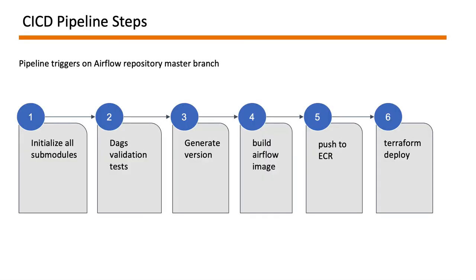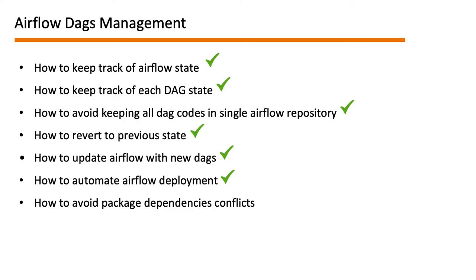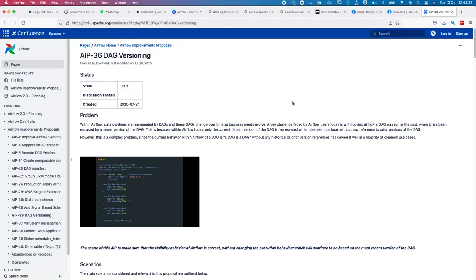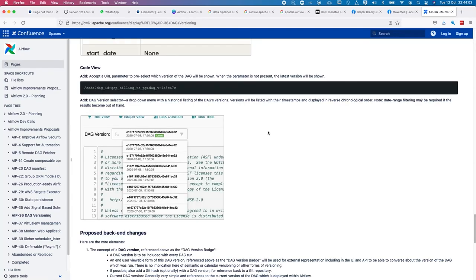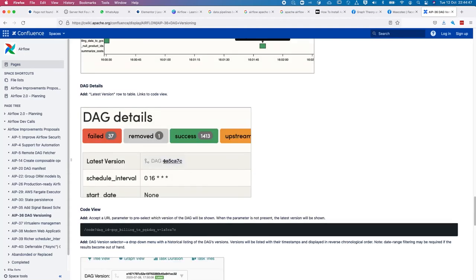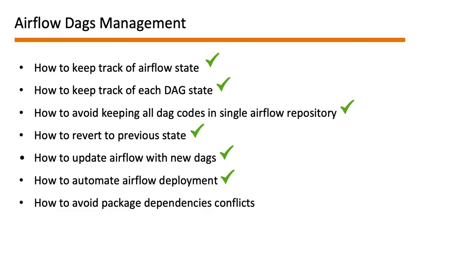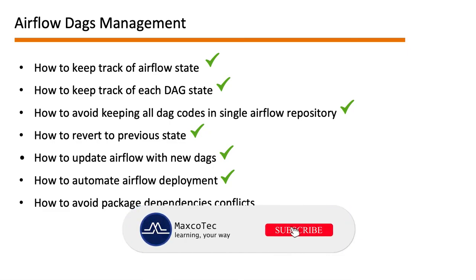That is how we are maintaining our Airflow instances. If there is anything you think I haven't covered, or you have experienced different kinds of issues, please share in the comments below — I'd love to hear them and discuss possible resolutions. It's also worth mentioning that Airflow is going to support DAG versioning natively. There is already a proposal, AIP-36, for DAG versioning where from the code view you can see different versions of DAGs from the UI. It may already be released by the time you watch this, but currently it's under discussion. The last challenge — managing package dependency conflicts — will be covered in our next video.